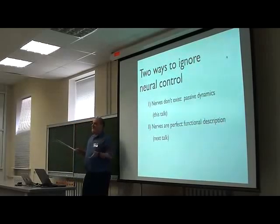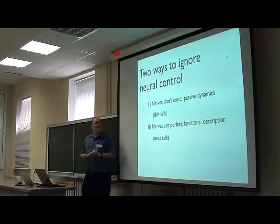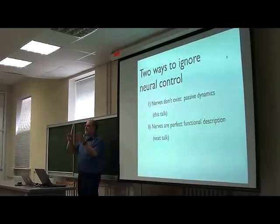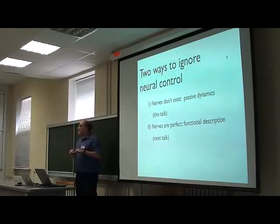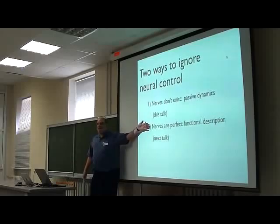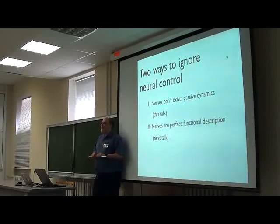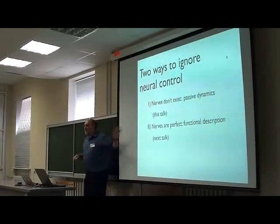If you look at an animal, it has a brain and a nerve system, and you'd like to understand locomotion without understanding the nerve system. There are two extremes: one is what can you do without nerves at all — no control system. The other extreme is that the nerve system is so good that you don't have to think about it; you assume it's perfect and describe it by what it's trying to do, and whatever it's trying to do, it does perfectly.